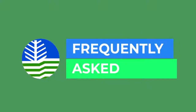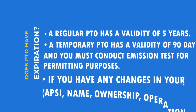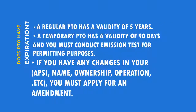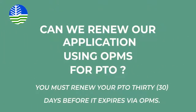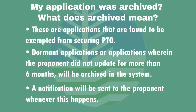Here are some frequently asked questions. Does PTO have an expiration? A regular PTO has a validity of 5 years. A temporary PTO has a validity of 90 days and you must conduct an emission test for permitting purposes. If your APSI has any changes, you must apply for an amendment. Can we renew our application using OPMS for PTO? You must renew your PTO 30 days before it expires via OPMS. What does archived mean? These are applications that are found to be exempted from securing PTO, or dormant applications wherein the proponent did not update for more than 6 months. A notification will be sent to the proponent whenever this happens.